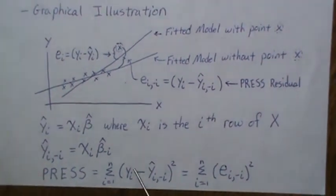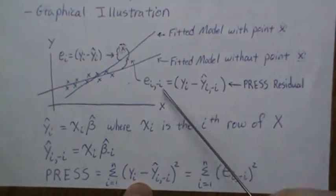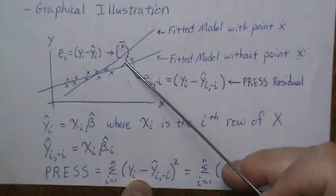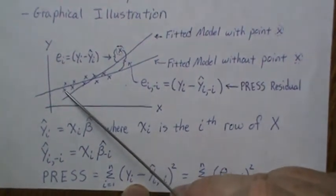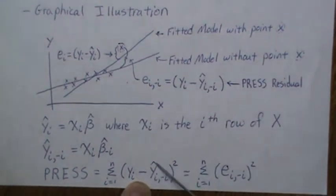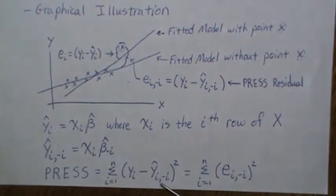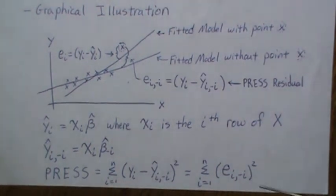The PRESS statistic squares each of these residuals — because sometimes Y will be larger than the fit giving a positive, and sometimes smaller giving a negative — to always get a positive number. Then you add them all up. That sum of squared PRESS residuals is called the PRESS statistic.